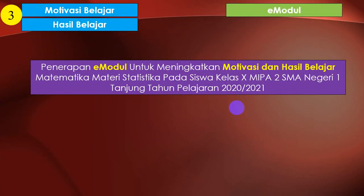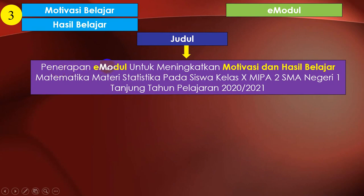Contoh ketiga: ini ada dua masalah yaitu motivasi belajar dan hasil belajar, solusinya satu yaitu e-module. Judulnya adalah: Penerapan E-Modul Untuk Meningkatkan Motivasi dan Hasil Belajar. Jadi meningkatkannya juga dua. Selebihnya sama: mata pelajaran, materi, kelas, SMA, dan tahun pelajaran.